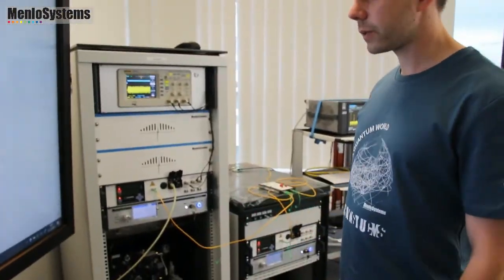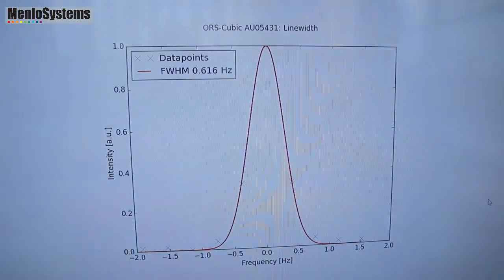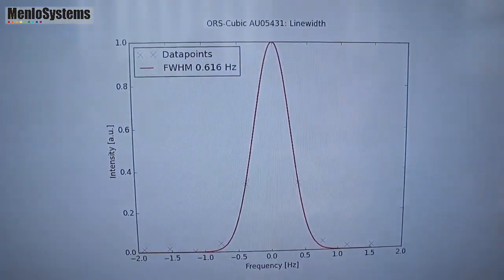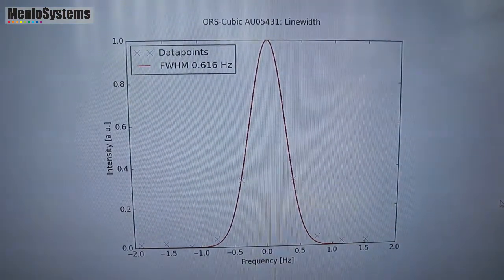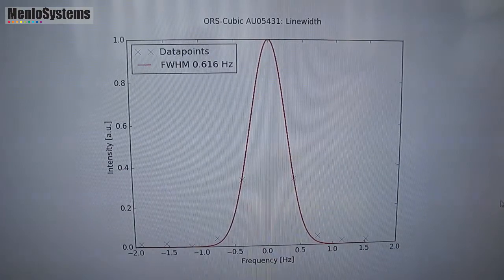And yeah this is the subhertz performance. Which you can get from these systems. And of course we can not only measure the Allan deviation. But we can also measure the line width of the laser. So I told you the cavity itself is maybe 5 kilohertz.